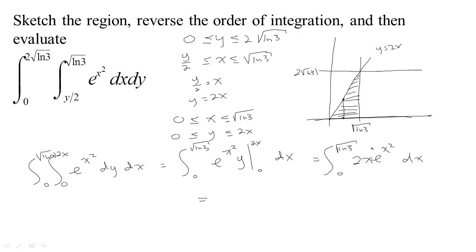Now this is easy to find an antiderivative of because 2x is the derivative of x squared. So I can just see that the antiderivative is e to the x squared. If you take the derivative of e to the x squared, you get e to the x squared times 2x. That's perfect.